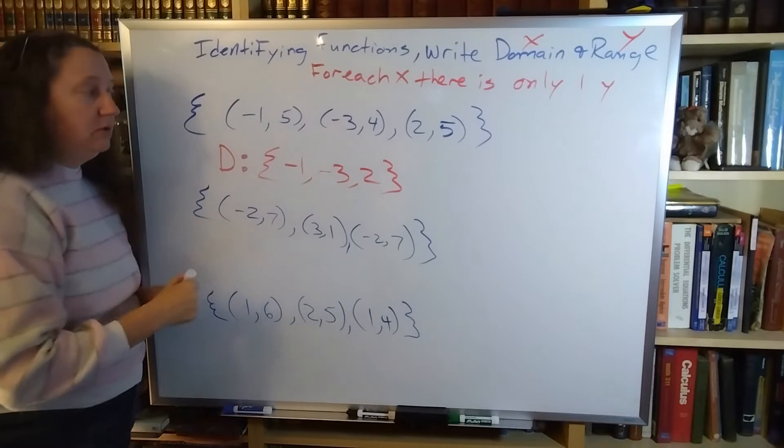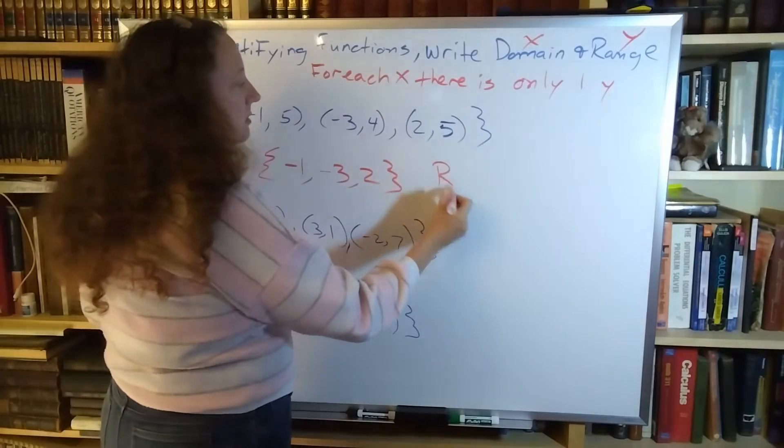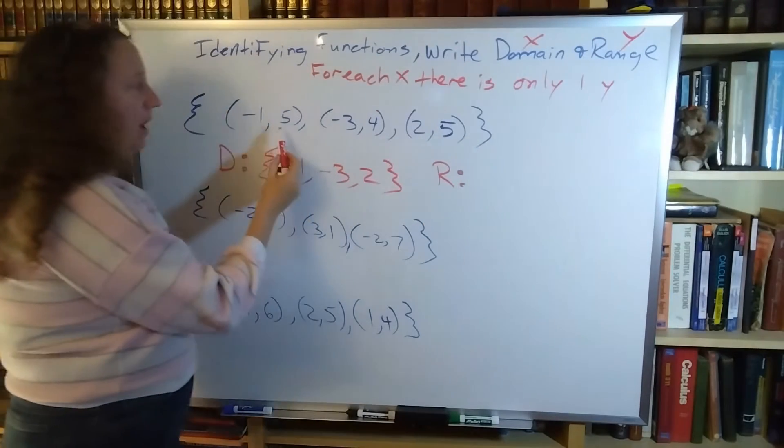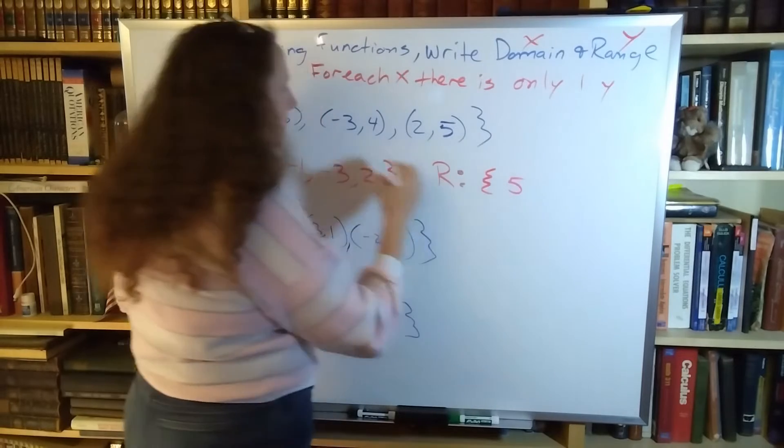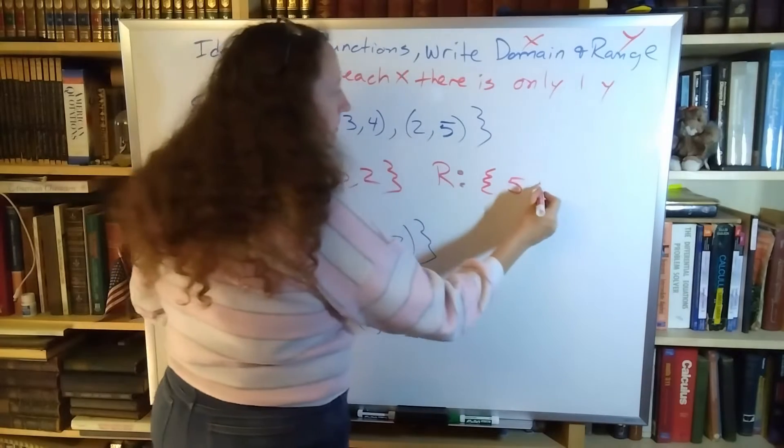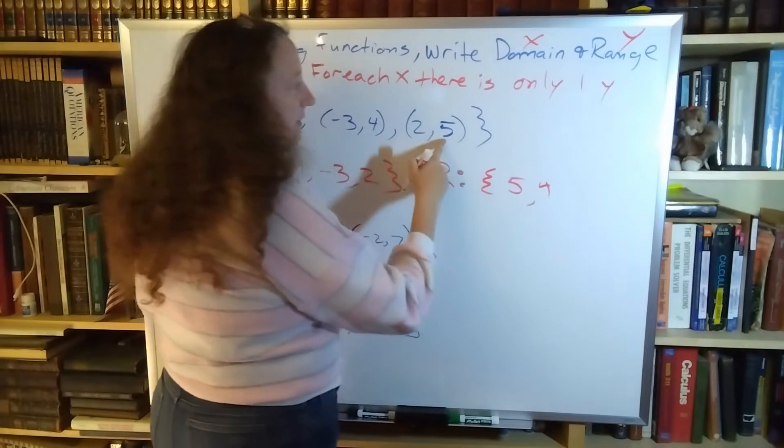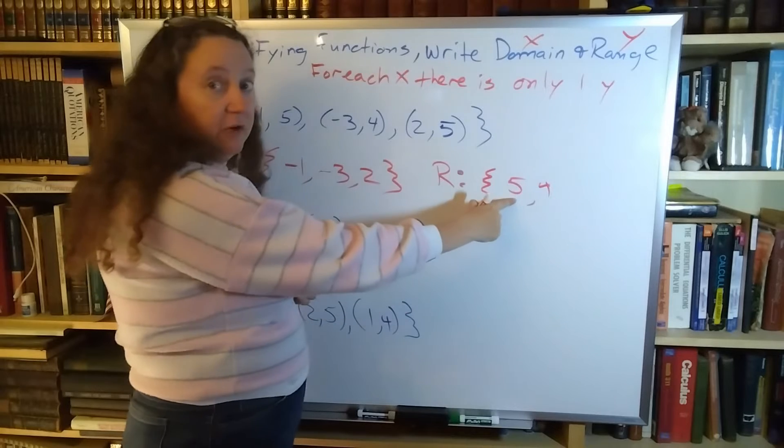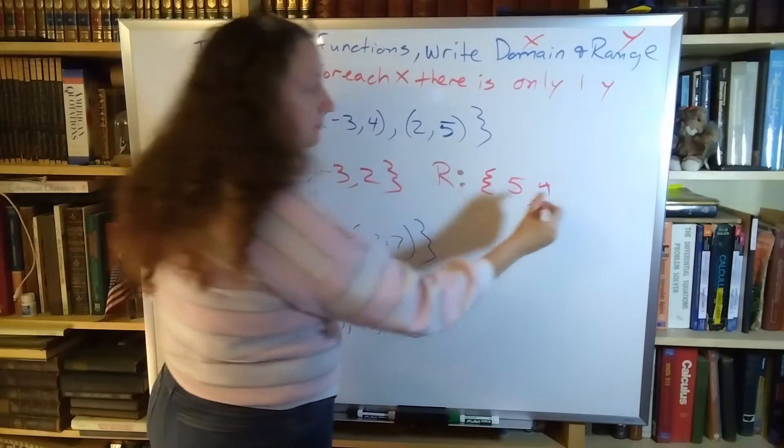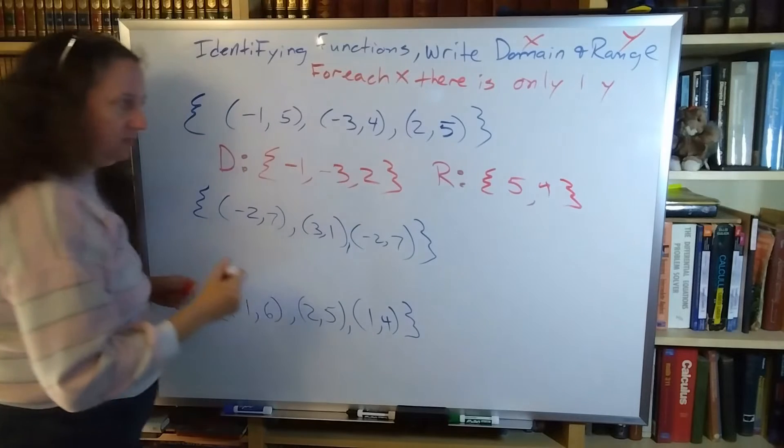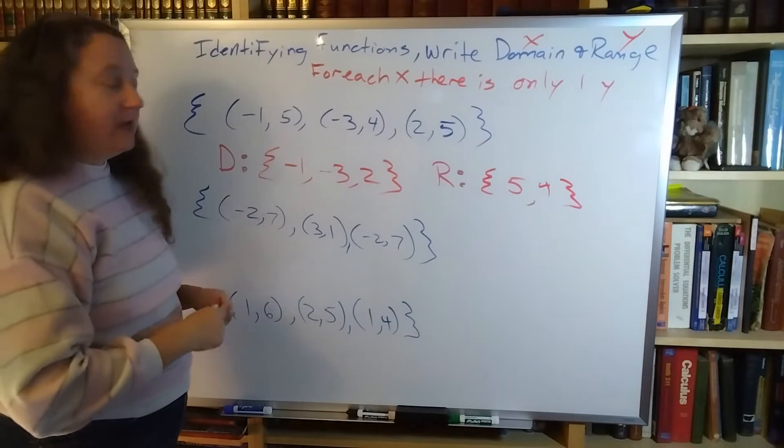My range is my y values: 5, 4, and 5 again. Because I already have 5 written, I don't need to write it a second time. So I can close my curly brace.